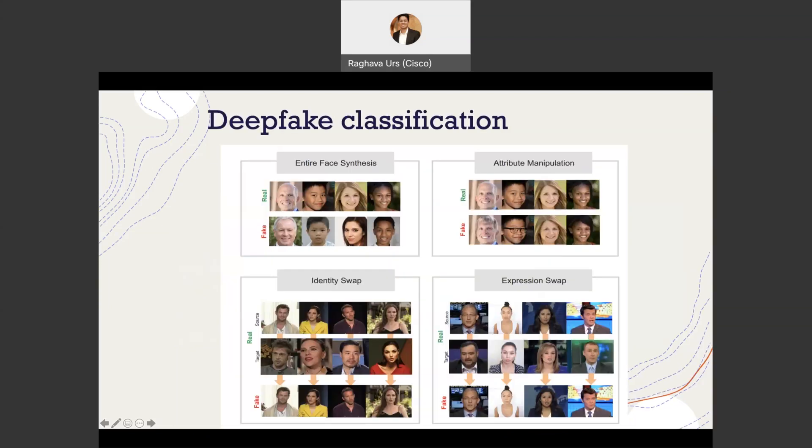There are multiple classification of deepfakes: entity face synthesis, attribute manipulation, identity swap, and expression swap. Expression swaps contain like lip sync and modification of features. These are the different types of deepfakes that you could see.